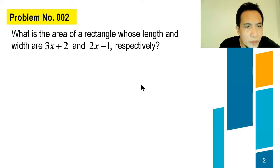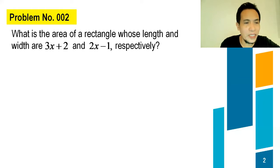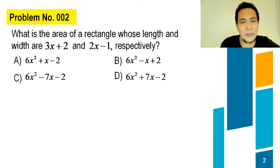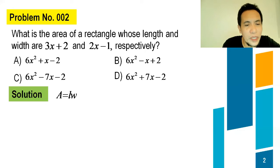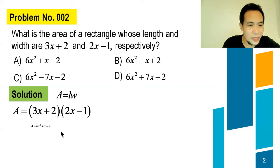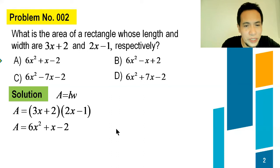Problem number 002: What is the area of a rectangle whose length and width are 3X plus 2 and 2X minus 1, respectively? Choices: A, 6X² plus X minus 2; B, 6X² minus X plus 2; C, 6X² minus 7X minus 2; D, 6X² plus 7X minus 2. For the solution, area equals length times width. Substituting, area equals (3X plus 2)(2X minus 1), which gives 6X² plus X minus 2. Therefore the correct answer is letter A.